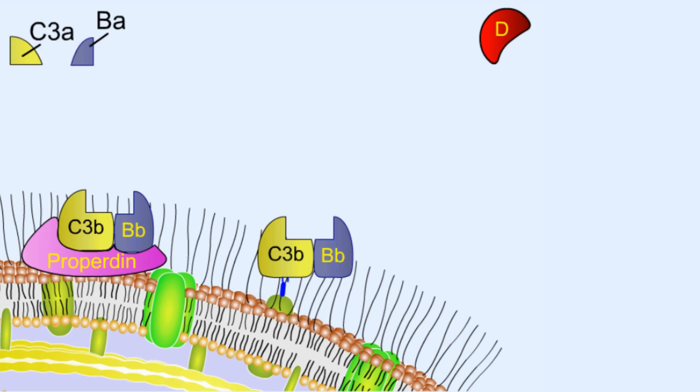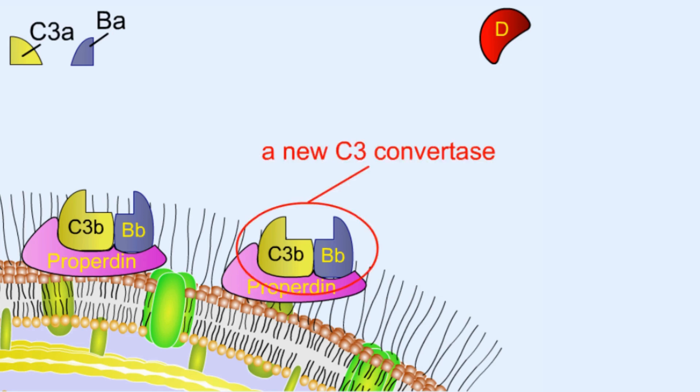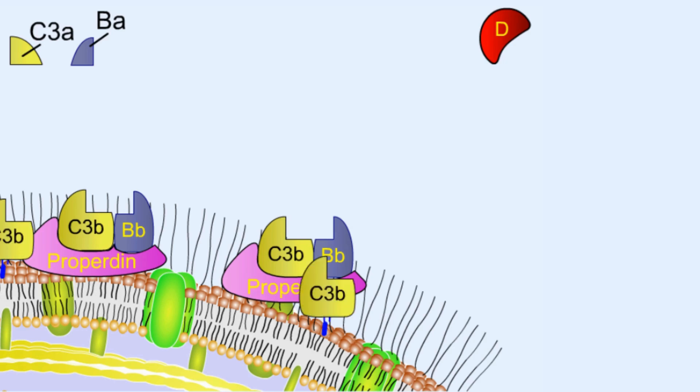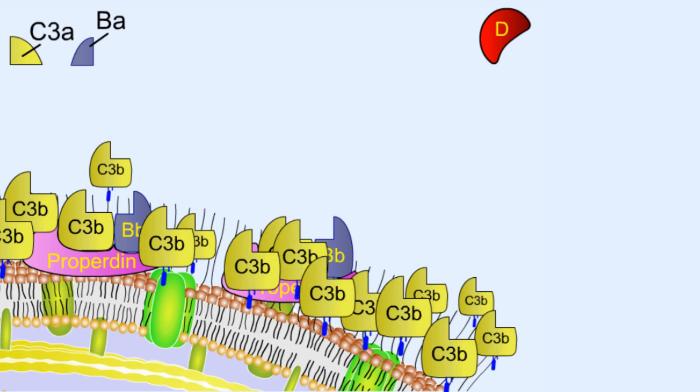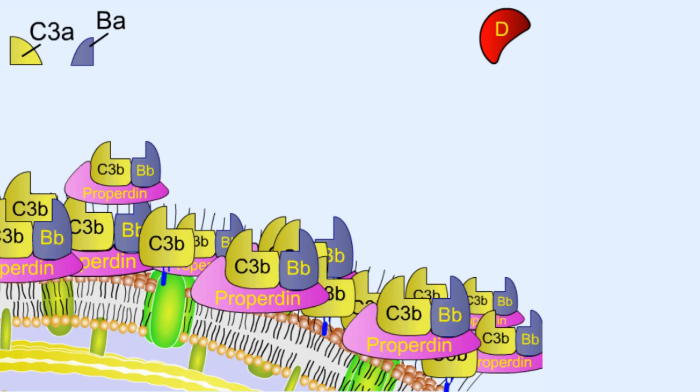By the same mechanism, sooner a lot of C3Bb complex start to form that can further cleave C3 complexes. And as a result, a lot of C3B is embedded and attached to the membrane surface in very less amount of time.